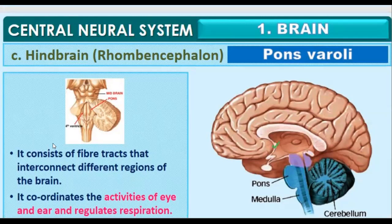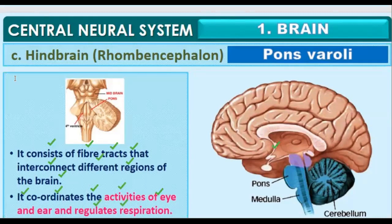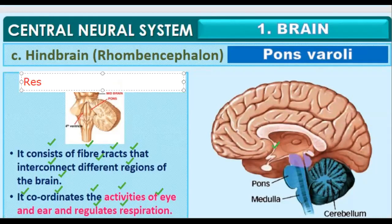The next part is the pons varoli. It consists of fiber tracts that interconnect different regions of the brain. Pons varoli connects different regions — like the midbrain and hindbrain — to each other inside the brain. It coordinates the activities of the eye and the ear, and also regulates respiration.